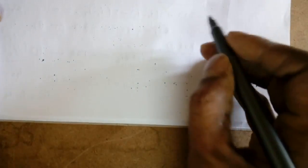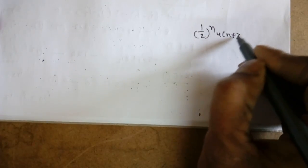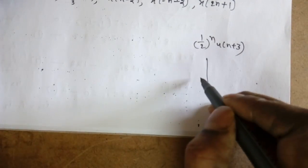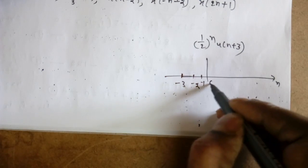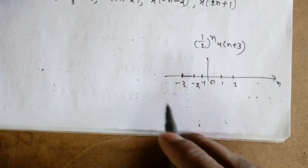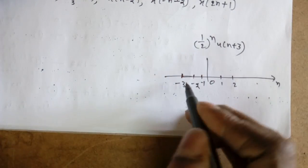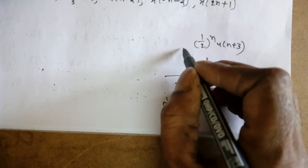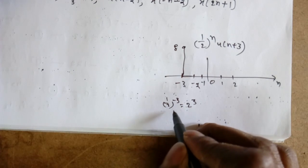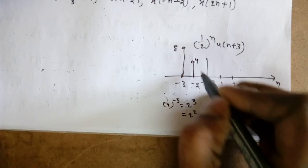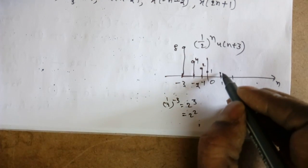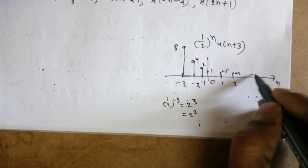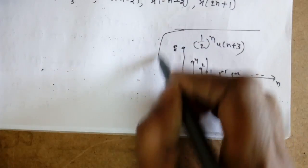Next example: (1/2)^n · u[n+3]. The waveform starts from n = -3, -2, -1, 0, 1, 2, etc. At n = -3: (1/2)^(-3) = 2³ = 8. At n = -2: 2² = 4. At n = -1: 2. At n = 0: 1. At n = 1: 0.5. At n = 2: 0.25, and so on. So it is a decaying function — one more discrete example.